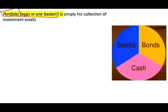What is a portfolio? A portfolio is a collection of investment assets. For example, this is a portfolio that consists of bonds, stocks, and cash — one-third, one-third, one-third. When we talk about portfolio, we have to understand two concepts.